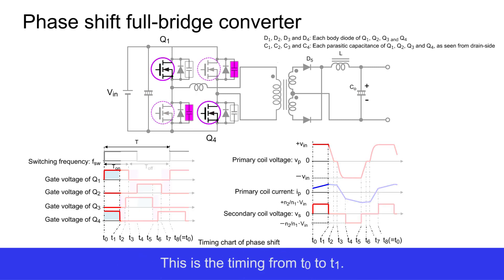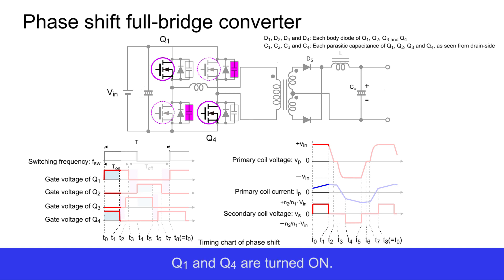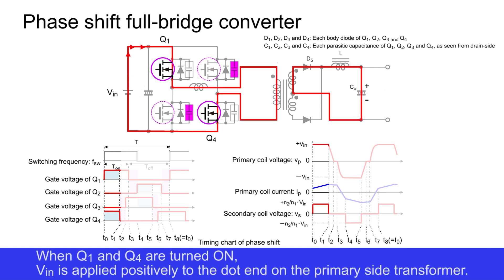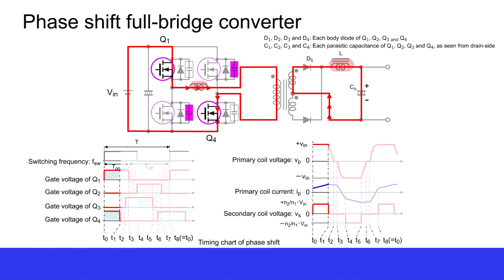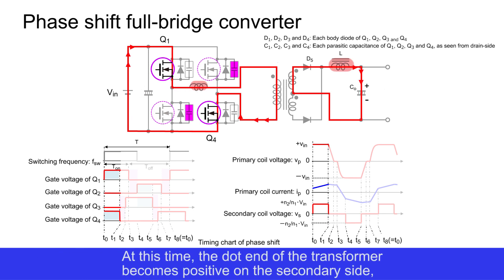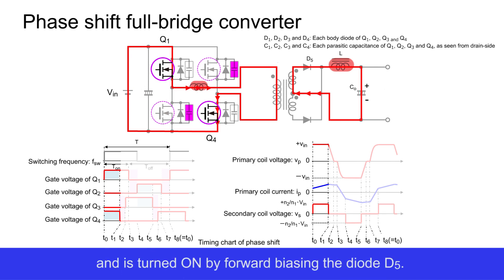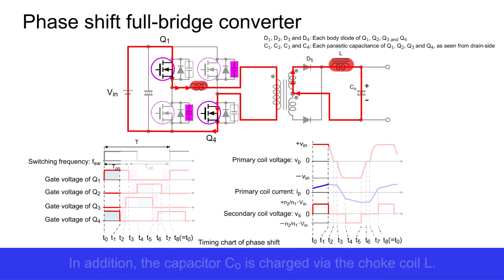This is the timing from T0 to T1. Q1 and Q4 are turned on. When Q1 and Q4 are turned on, VIN is applied positively to the dot end on the primary side transformer. At this time, the dot end of the transformer becomes positive on the secondary side and diode D5 is turned on by forward biasing. In addition, capacitor CO is charged via the choke coil L.